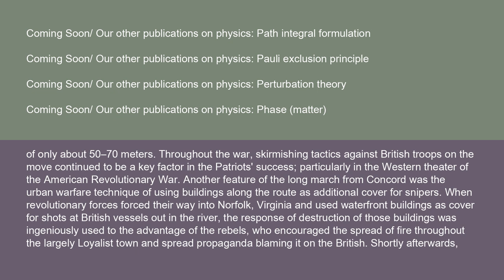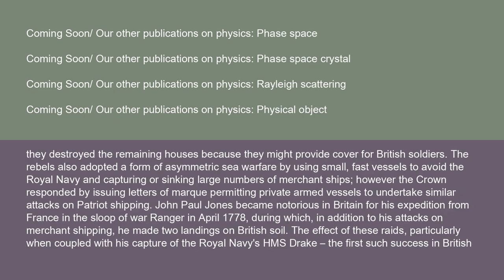Another feature was the urban warfare technique of using buildings as cover for snipers. When revolutionary forces entered Norfolk, Virginia, and used waterfront buildings as cover for shots at British vessels, the British destruction of those buildings was ingeniously used to the rebels' advantage — they encouraged the spread of fire throughout the largely loyalist town and spread propaganda blaming it on the British. The rebels also adopted asymmetric sea warfare, using small, fast vessels to capture or sink large numbers of merchant ships, though the Crown responded by issuing letters of marque permitting private armed vessels to undertake similar attacks.